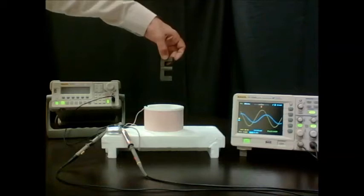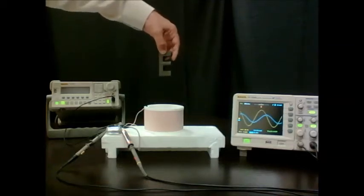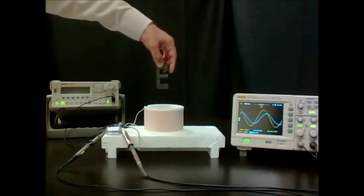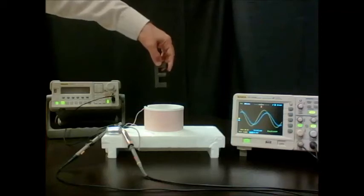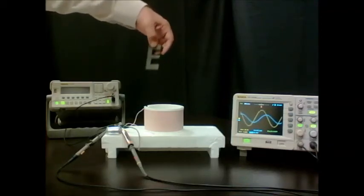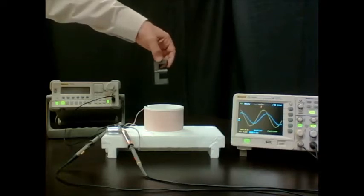The frequency shifts to the right, meaning that the resonance frequency has decreased. This is because the ferrite increases the inductance of the coil.